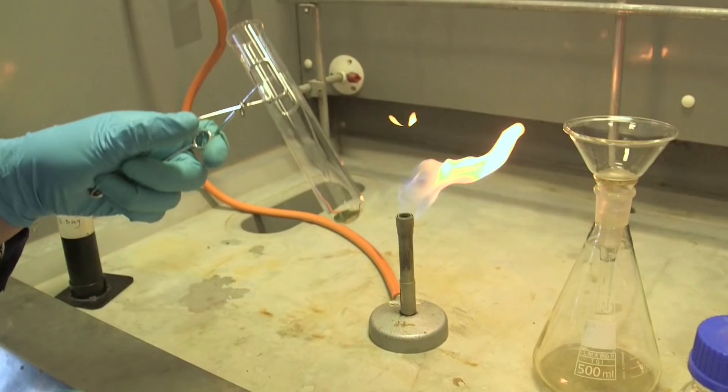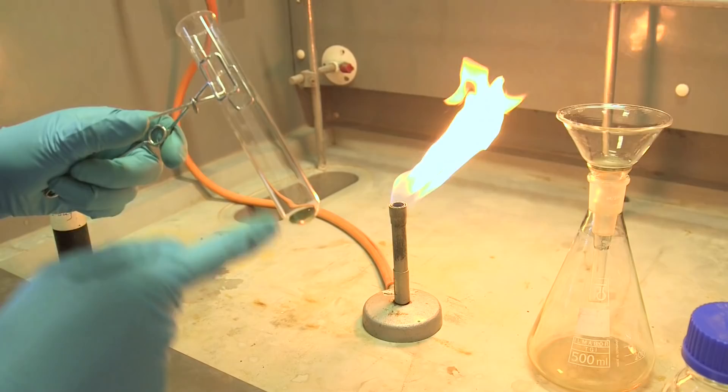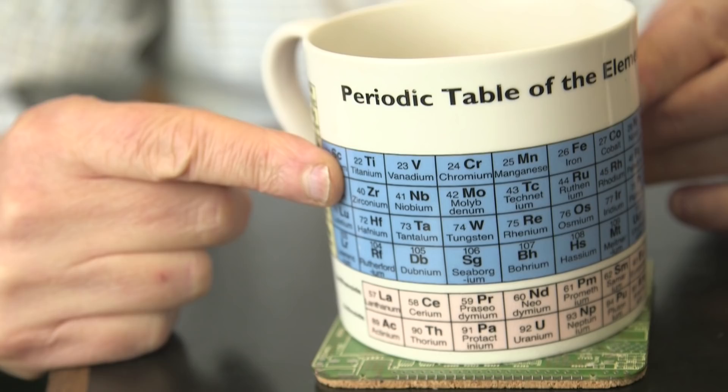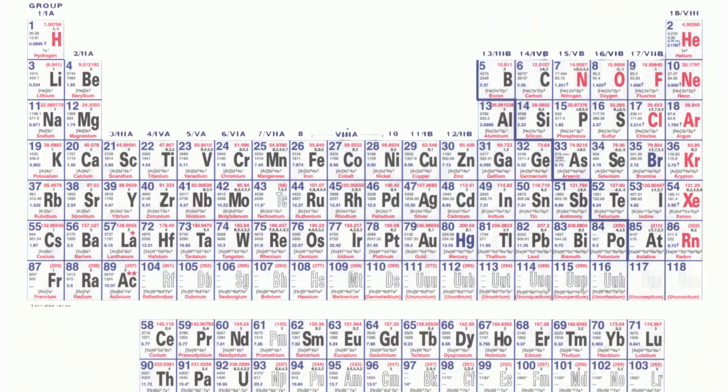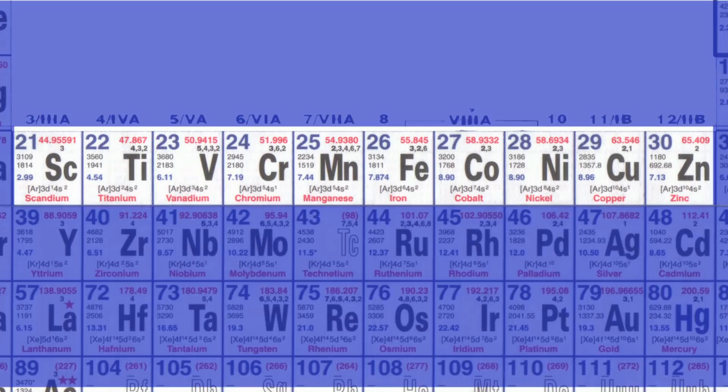It is one of the transition metals, and the row of transition metals stretches all the way from scandium over here to zinc over there. What makes manganese particularly interesting is that it is in the middle of this transition group. There are ten transition metals from scandium to zinc, and manganese is number five.